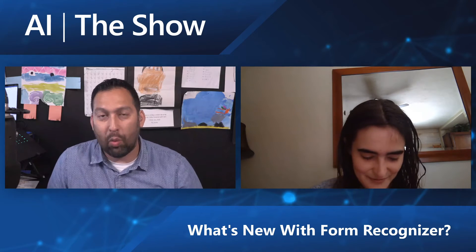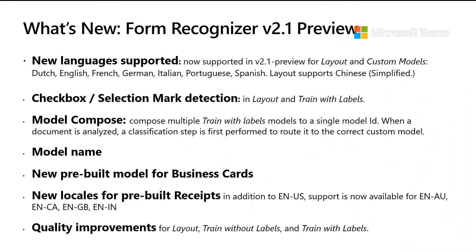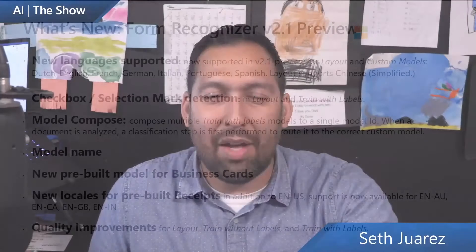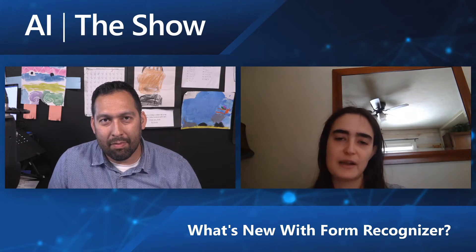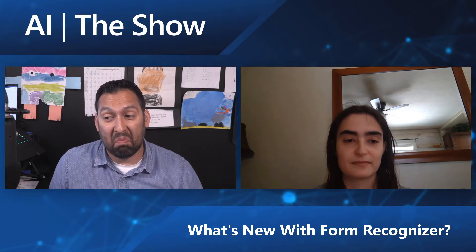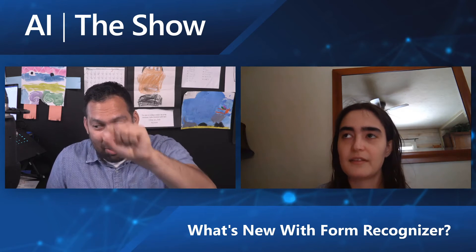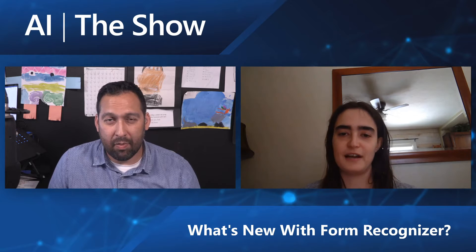We also support checkboxes and selection marks now, both in layout and train with labels. And yes, it works with actual handwriting as well. Form Recognizer has a very high quality handwriting OCR model — we're able to recognize both printed and handwritten text, including an X or a checkmark. If someone's handwritten a little X in the form, that works just as well as a printed checkmark.